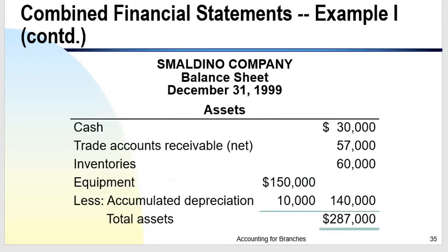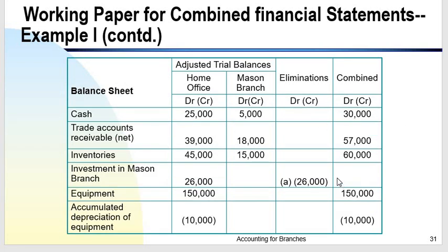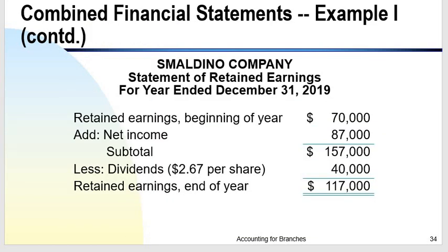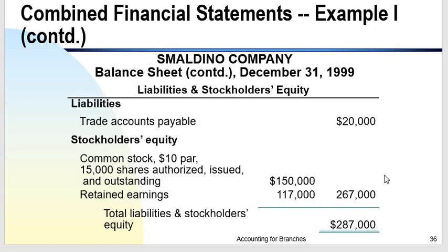For the combined balance sheet: refer to the working paper combined figures. Cash is $30,000. Take note that there is no longer an investment in branch account — it has been eliminated. All assets are included except the investment in branch. On the liabilities and equity side, the home office account has been eliminated. Total assets and total liabilities and equity both amount to $287,000.